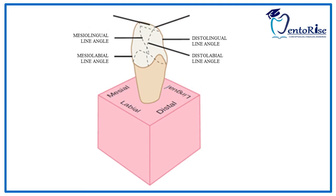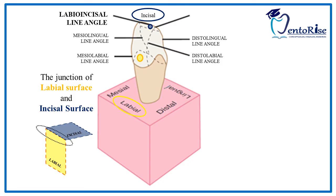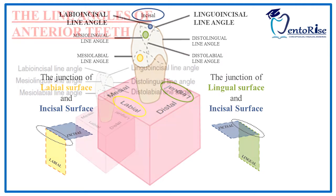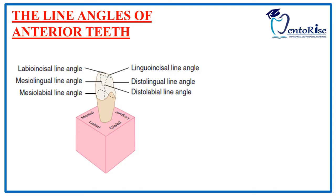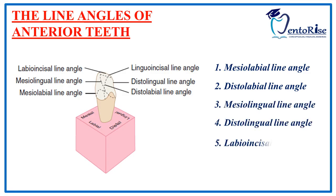In the same way, the junction of the labial surface represented in yellow and the incisal surface represented in blue forms the labioincisal line angle. The junction of the lingual surface represented in green and the incisal surface represented in blue forms the linguoincisal line angle. Therefore, the six line angles of anterior teeth are: mesiolabial, distolabial, mesiolingual, distolingual, labioincisal, and linguoincisal line angles.